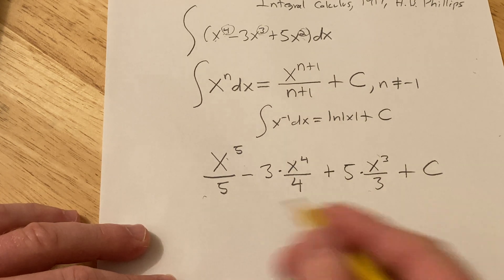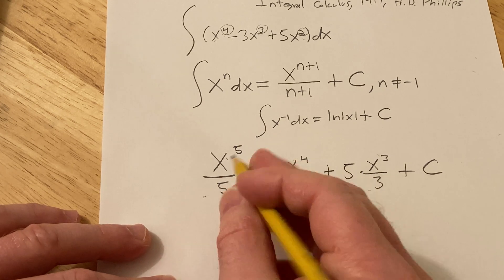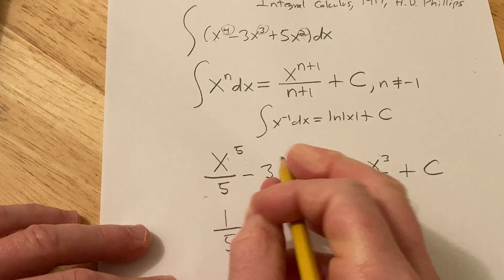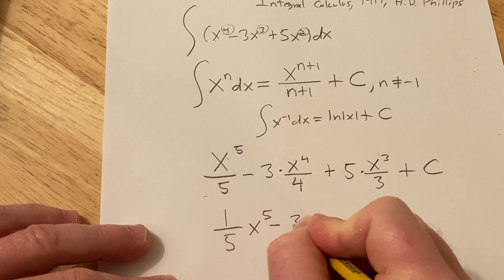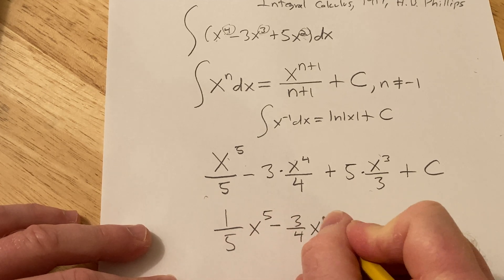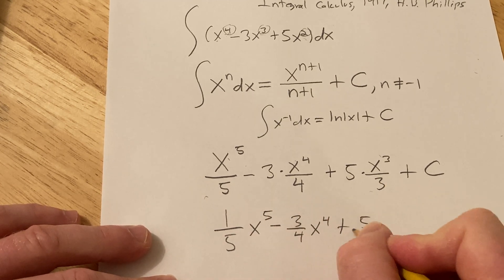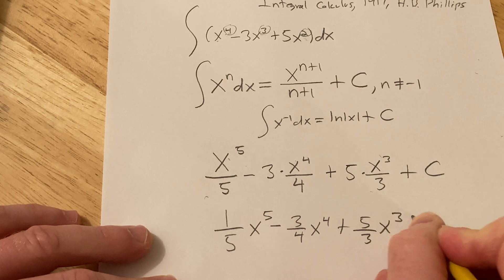Typically, you don't leave your answer like this. It looks pretty ugly, so I'm going to pull out all the constants like this. 1 fifth x to the 5th minus 3 fourths x to the 4th plus 5 third x cubed plus c.